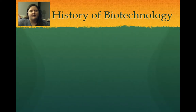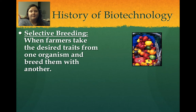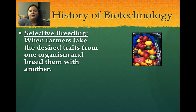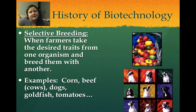History of biotechnology: as humans, we've been using biotechnology for as long as we've been around through the process of selective breeding. That's when farmers take the desired traits from one organism and breed them with another. We've done this with fruits and vegetables, corn, cows to produce beef, our pets, dogs and cats, goldfish, tomatoes, etc.